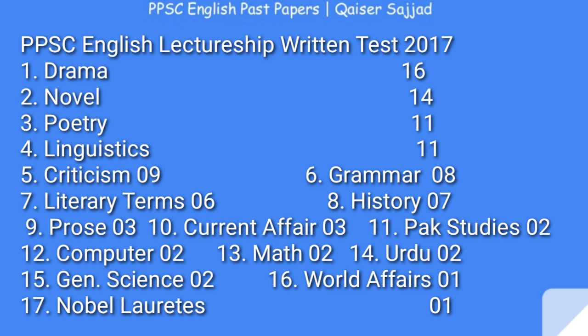The division of General Ability questions in the 2017 paper was: Current Affairs had 3 marks, Pakistan Studies had 2 marks, Computer Science had 2 marks, Mathematics had 2 marks, Urdu had 2 marks, General Science had 2 MCQs, and World Knowledge had 1 MCQ. Similar to the previous paper, one question on Nobel Laureates was also included.